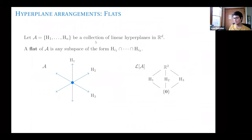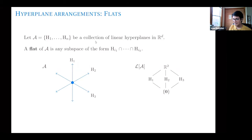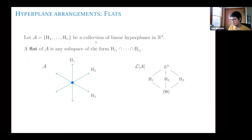Let me define a couple of things regarding hyperplane arrangements. We are working over R^d, considering linear hyperplane arrangements — the hyperplanes are linear subspaces of R^d. An important definition is a flat of the arrangement: a flat is any subspace obtainable as an arbitrary intersection of hyperplanes. This can range from R^d itself (intersection of no hyperplanes) to each individual hyperplane, to intersections like the zero vector. These flats form a poset and actually a lattice.